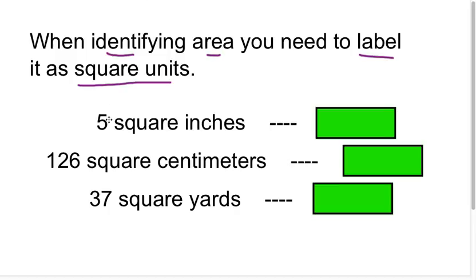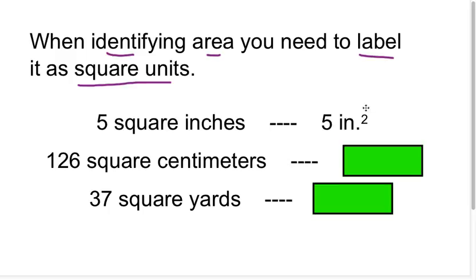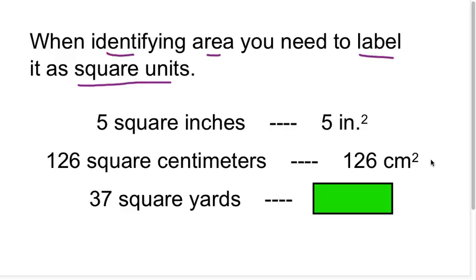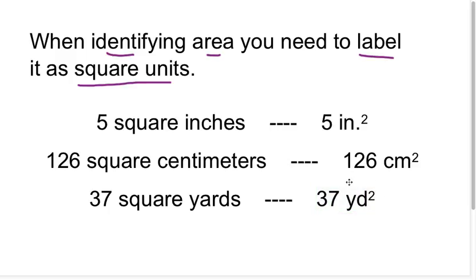When identifying area, you need to label it as square units. So if you have 5 square units, you would label it as 5 square inches — this small two means you are working with square inches. If you had 126 square centimeters, you would have cm to the second power. If you had 37 square yards, you would have 37 yards to the second power, or 37 square yards.